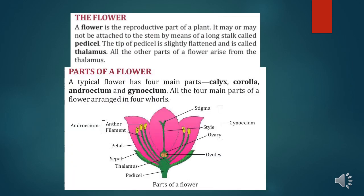Dear students, in the first chapter we have already discussed about the parts of a plant like roots, leaves, and fruits. Now in this chapter, we will study about the flower.